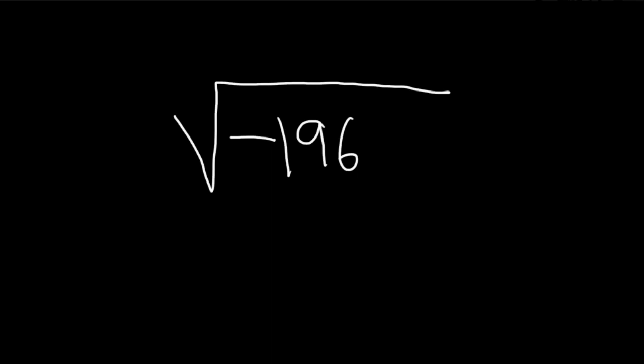In this problem, we want to simplify the square root of negative 196. So the first step in a problem like this is to deal with the negative under the square root. Whenever you see a negative like this under a square root, it automatically becomes an i. So we'll write this as i, and then we have the square root of 196.